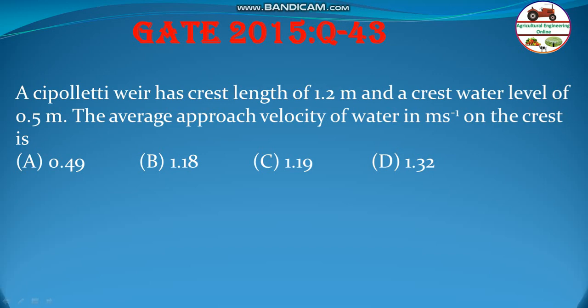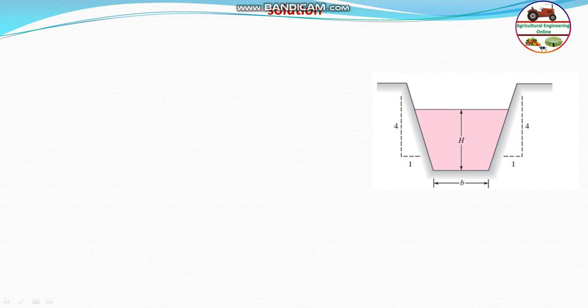Let us look at the solution, because this problem is very simple. Go to solution quickly. First of all, what is cipolletti weir? This is a rectangular weir, actually this one, especially trapezoidal.